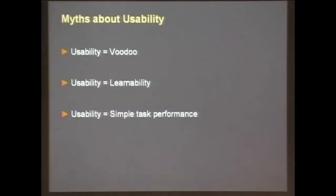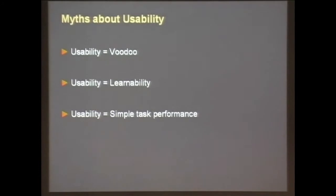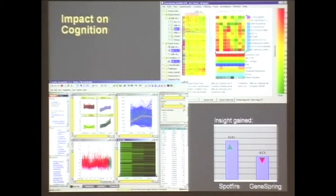Beyond learnability and to performance. Myth number three: usability is just about simple task performance. Sure, it takes an extra second and a half in the old maps versus Google Maps — big deal, right? But the other thing I want to convince you of is that it affects more than just that second and a half of time. It actually affects your ability to think about the problem you're trying to solve. In other words, the clunkiness of the interface will have impacts on cognition — on your user's ability to think deeply about hard problems.